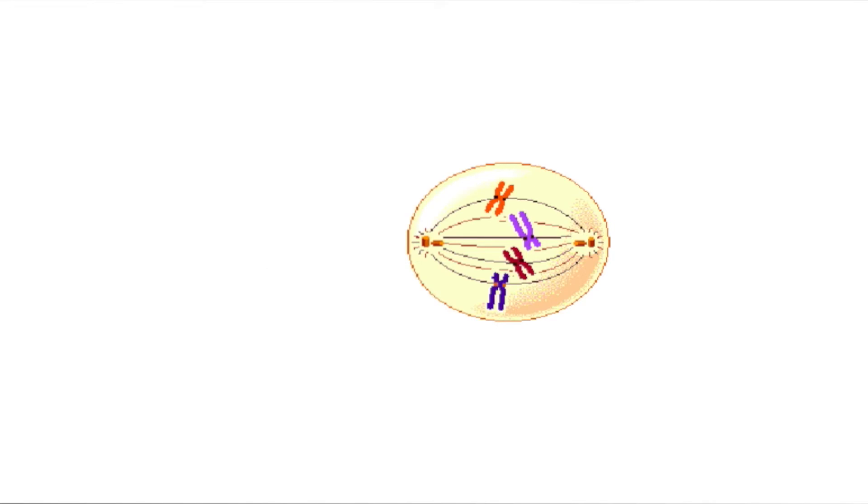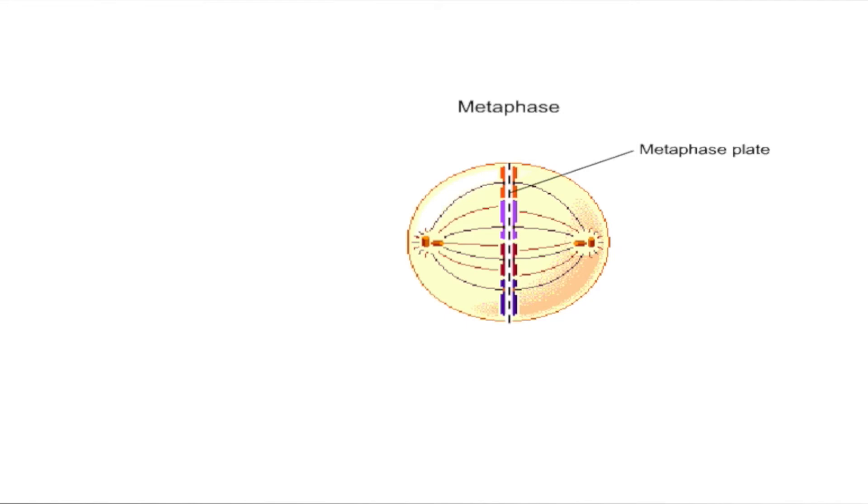During metaphase, the kinetochore microtubules align the sister chromatids along an imaginary plane halfway between the two centrioles at the opposite ends of the cell. This plane is called the metaphase plate. The spindle is fully formed at this point and the chromosomes are at their most condensed.